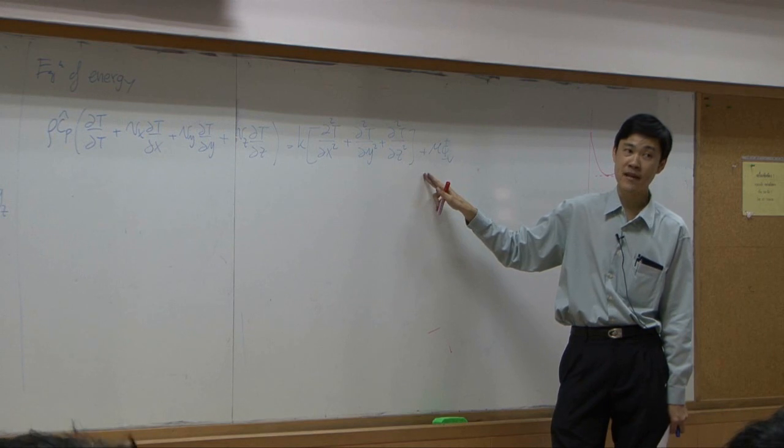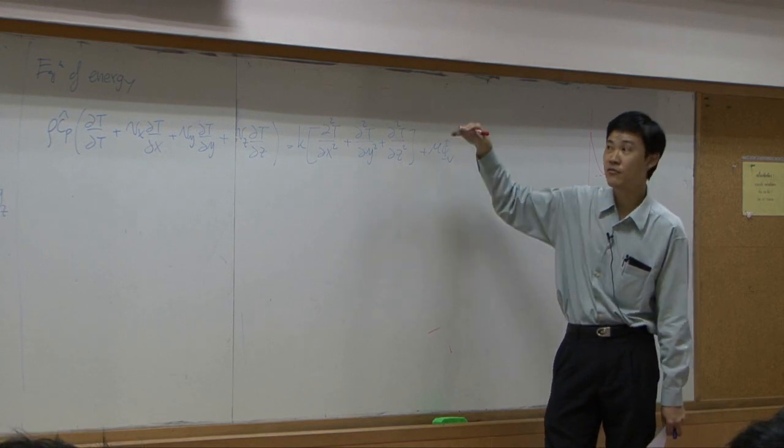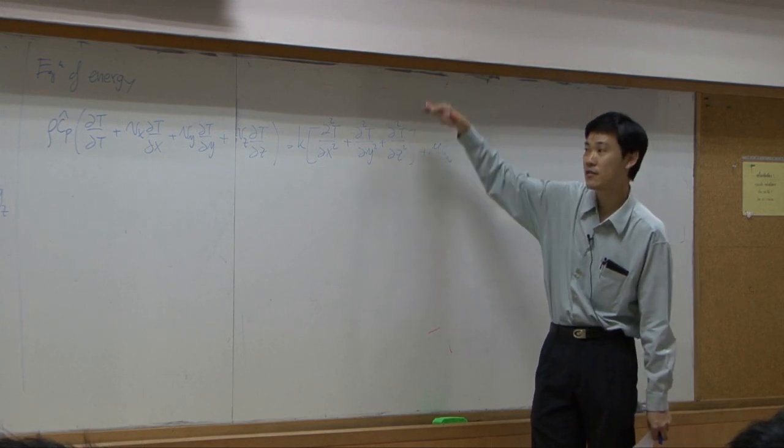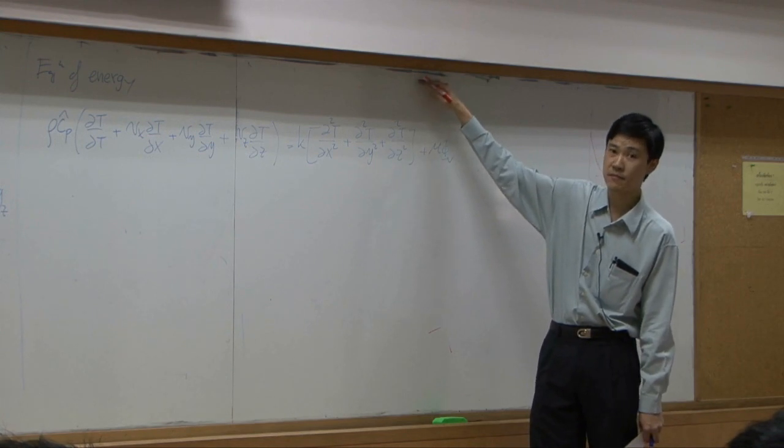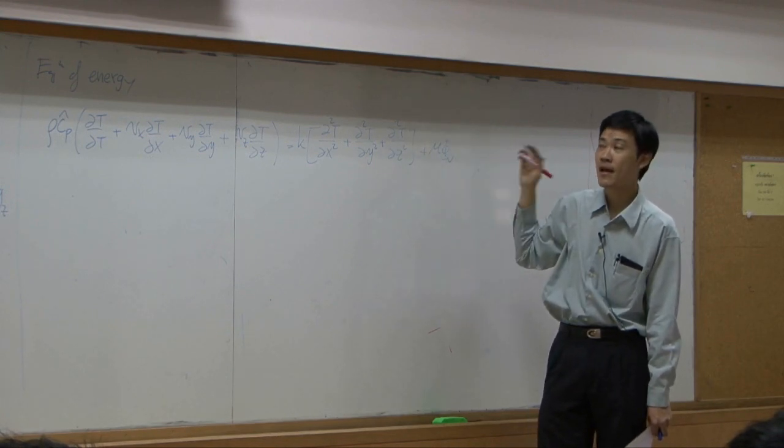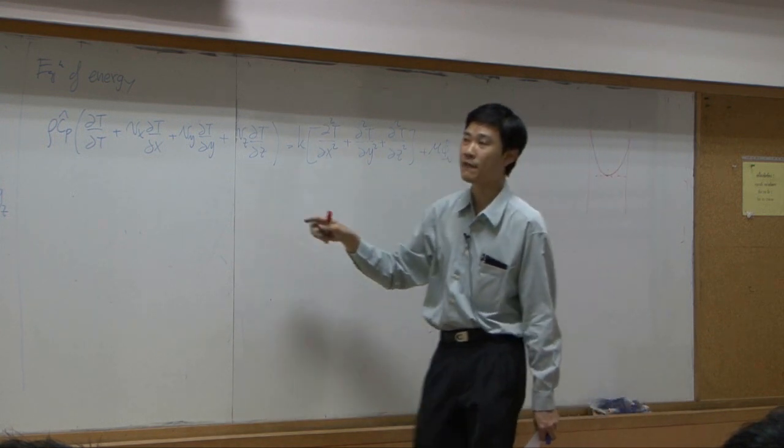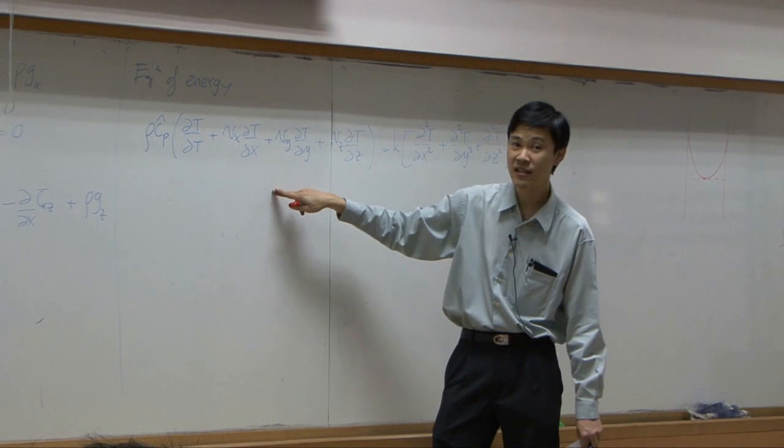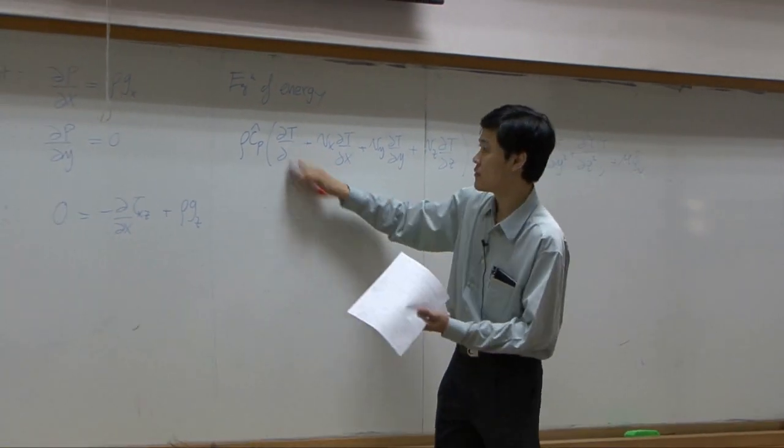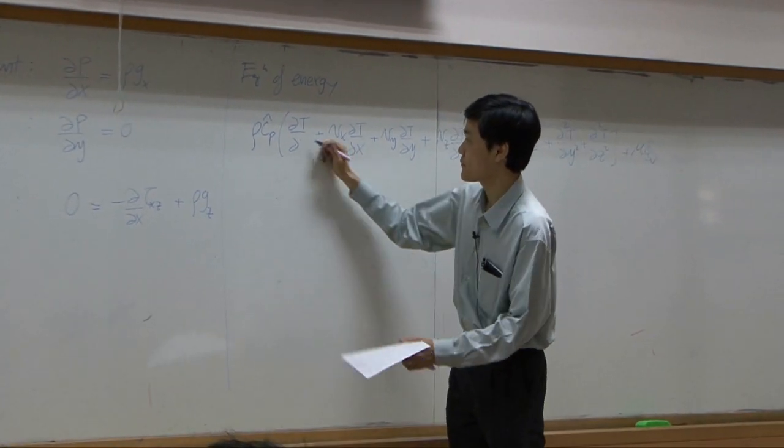If you want to do it correctly, you need to move up from this equation one step. However, when you move it up one step, you have rho CP dT by dt.